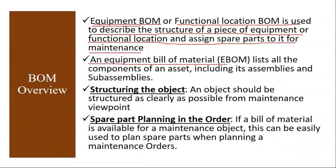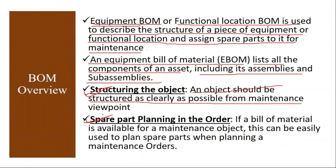An equipment bill of material lists all the components of an asset, including its assemblies and sub-assemblies. I will show this in the system. Basically, you will come to know what spare parts are present in that particular equipment. The technician or the person creating the service orders will know which ones to select directly. The main uses of creating BOMs are: one is structuring the object, and another is spare part planning in the order. An object should be structured as clearly as possible from a maintenance view — you get the entire structure of that particular equipment and its spare parts with quantities.